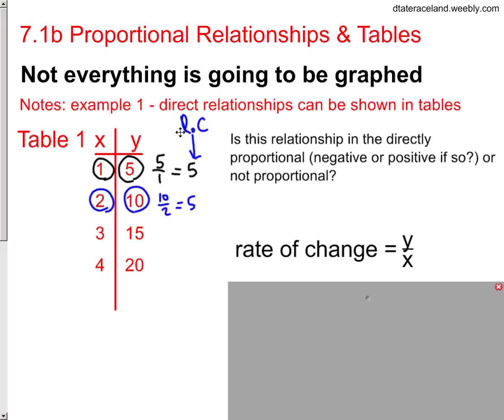Let's just call it our rock, our rate of change. And so 15 divided by 3, that's 5, and 20 divided by 4, that's 5. So we know that we get the same rock or the same rate of change every single time.